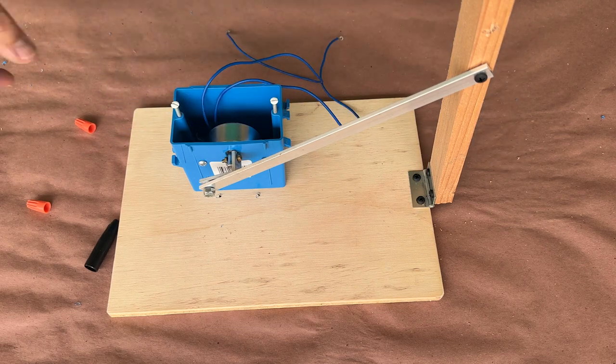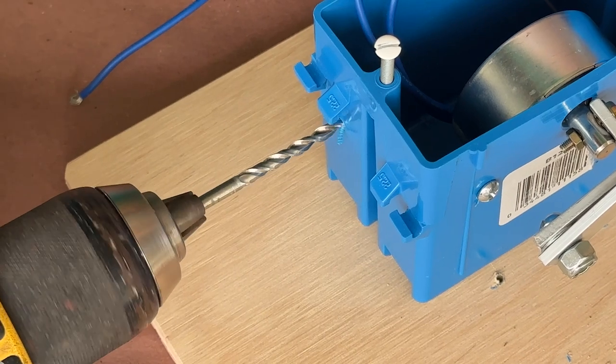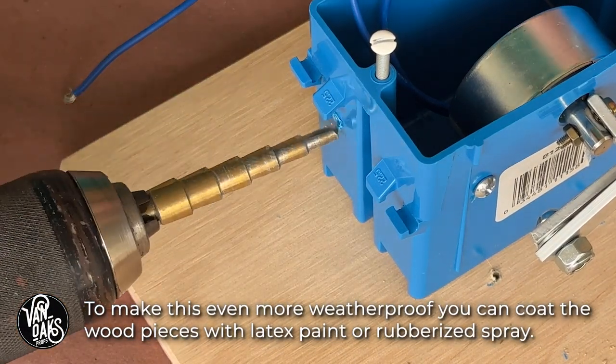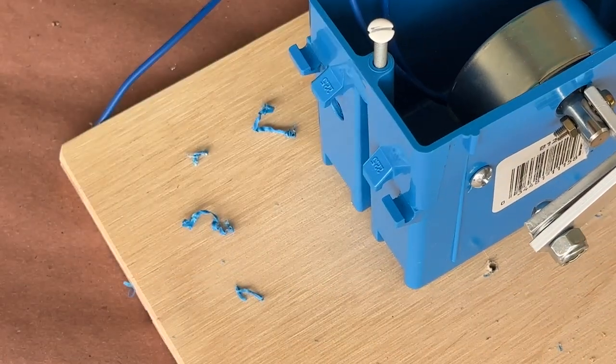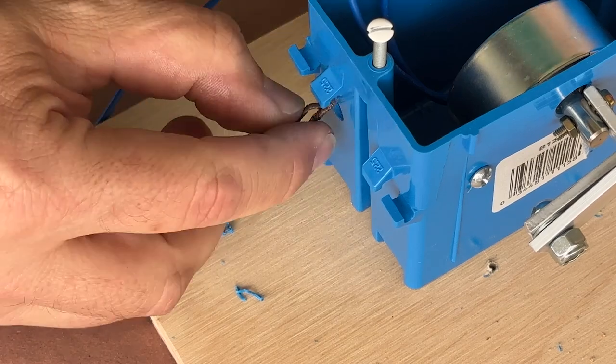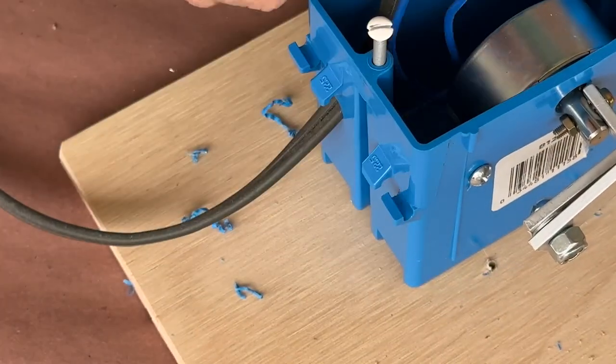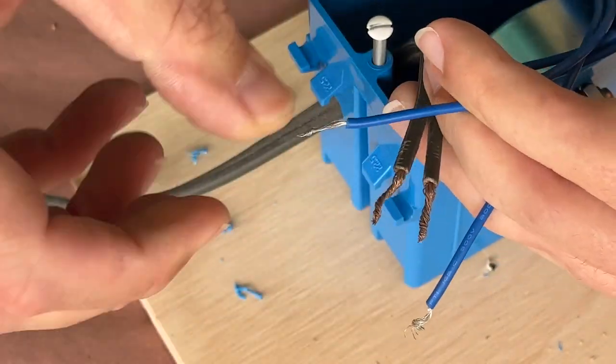But first I want to add a hole for our extension cord to go through. These boxes have holes in the bottom that can be punched out for wires. But if you're in a place where you get weather, you'll want to use a bit of caulking to close up those holes to make this a bit more weatherproof. Adding the hole closer to the top will minimize the possibility of the box filling up with water should you get rain.